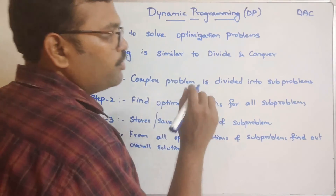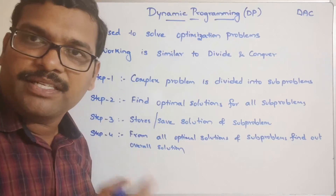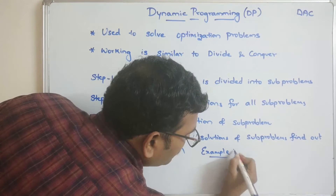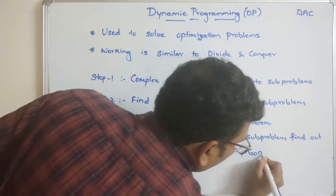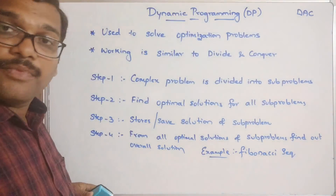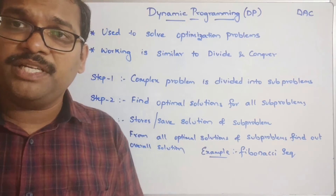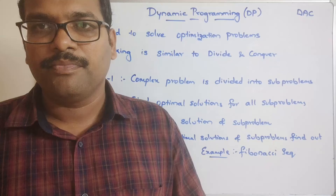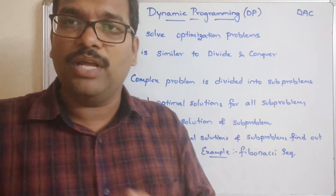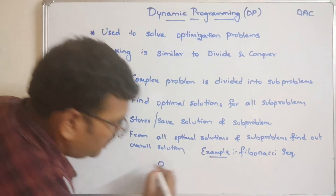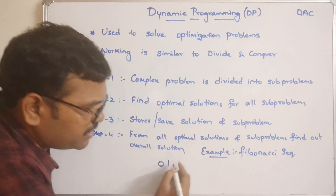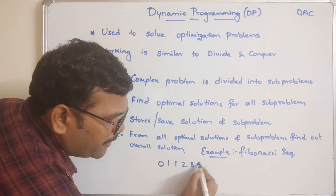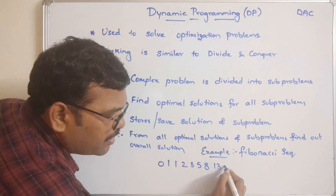Now let me explain overlapping and non-overlapping sub-problems with the example of the Fibonacci sequence. In the Fibonacci sequence, each element is the addition of the previous two elements — for example: 0, 1, 1, 2, 3, 5, 8, 13, 21, and so on. So the formula is F(n) = F(n−1) + F(n−2).